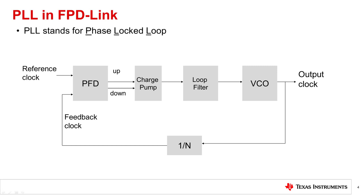Inside an FPD-Link serializer, a PLL takes a reference clock and generates a higher-speed serial clock, which is usually a multiple of N of the reference clock frequency. In an FPD-Link deserializer, the PLL is used to extract the clock from the high-speed data stream.